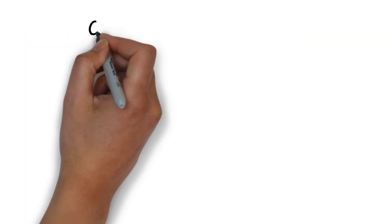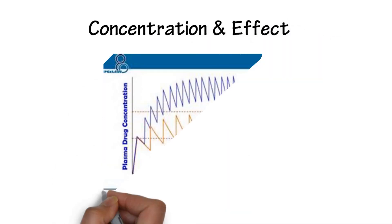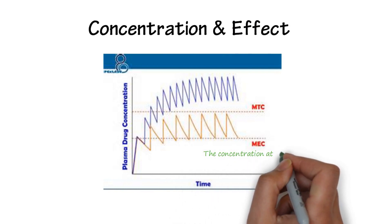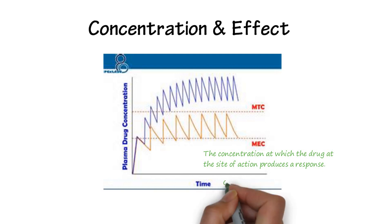Concentration and effect. To produce an effect, the concentration must achieve a minimum effective concentration, or MEC. The concentration at which the drug at the site of action produces a response. The time MEC is reached and the response occurs is the onset of action. The time period when the drug produces the desired effect is the duration of action.